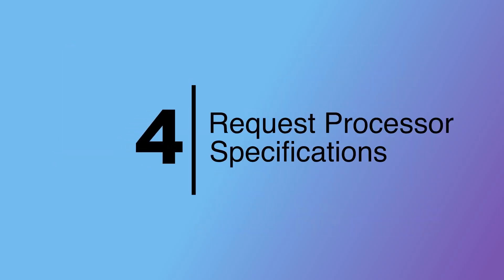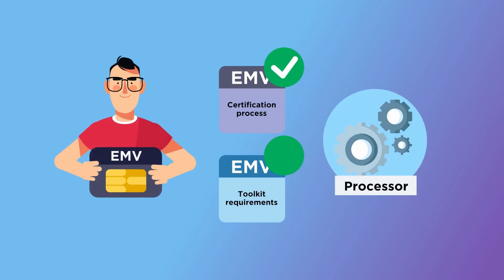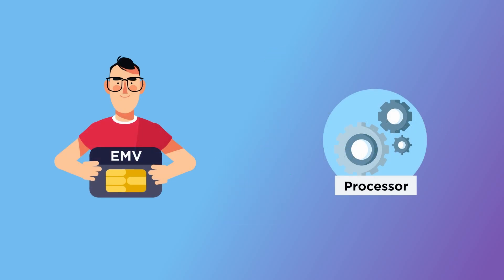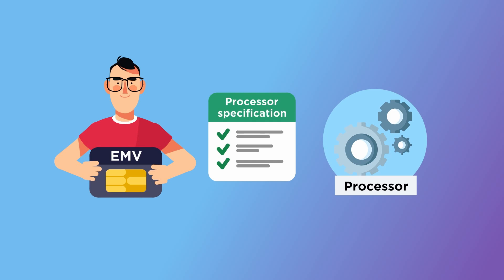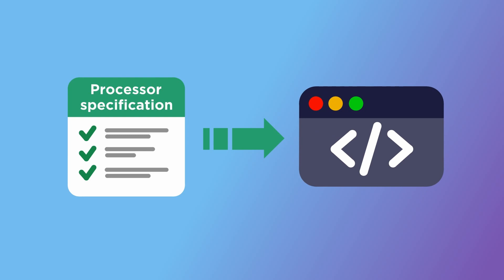Step 4: Request Processor Specifications. Once you receive confirmation from the processor, you need to request its payment processing specifications. This will help you ensure that all the required functionality is supported and estimate the integration efforts. Processor Specification is also the starting point for code development.